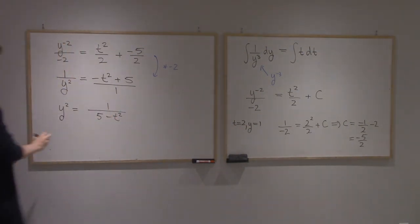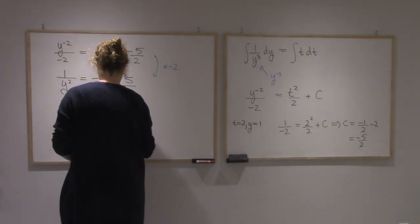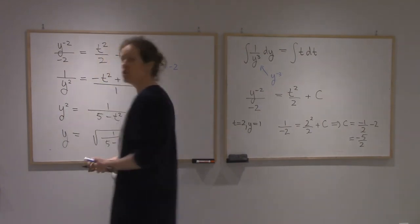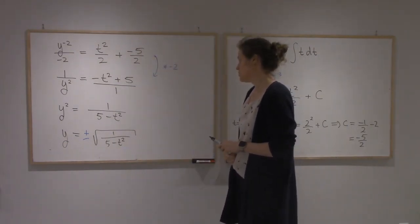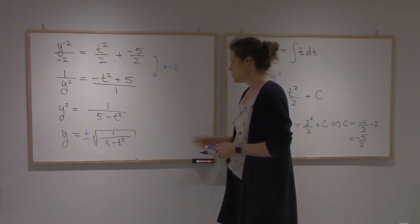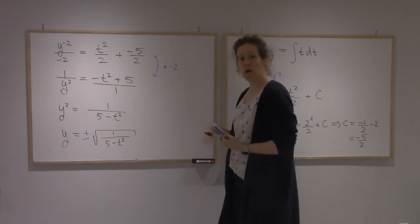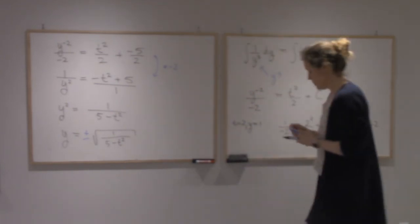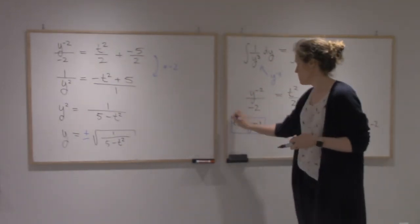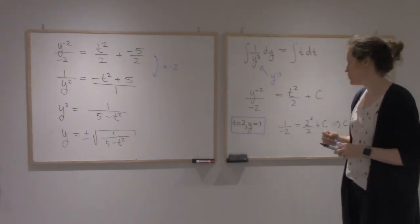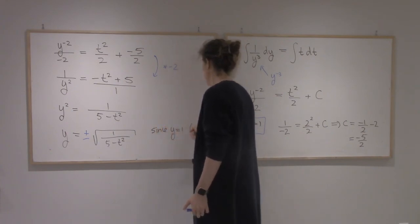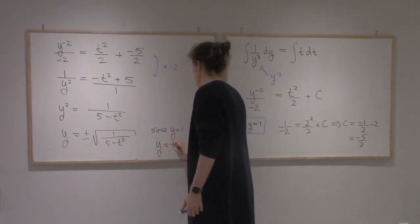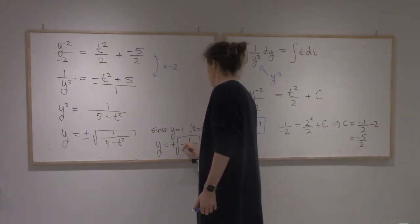And so now I just have to take a root. But I don't know which one yet. So I'm going to put plus or minus. Both would work with the initial differential equation. And so at this point, I need to figure out whether in my specific case it was plus the root or minus the root. And I go back to this. When t is equal to 2, y was plus 1. So since y equals 1 when t equals 2, I will take y to be plus the square root of 1 over 5 minus t squared.